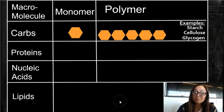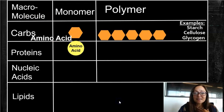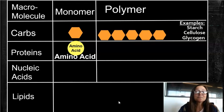Okay, so in this video we're going to talk about proteins. Proteins have a single building block called an amino acid. This amino acid is its monomer.